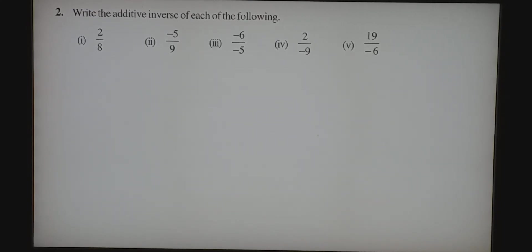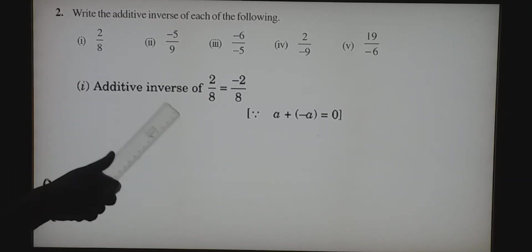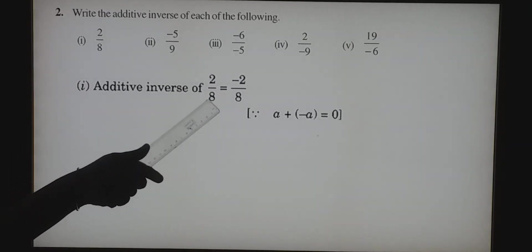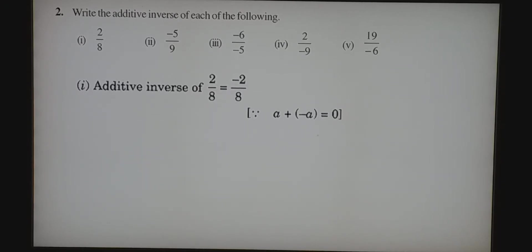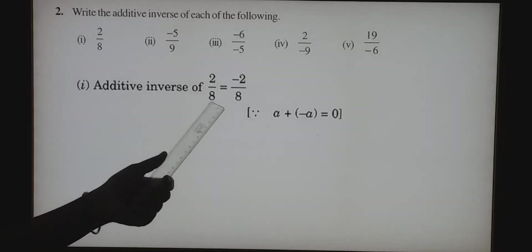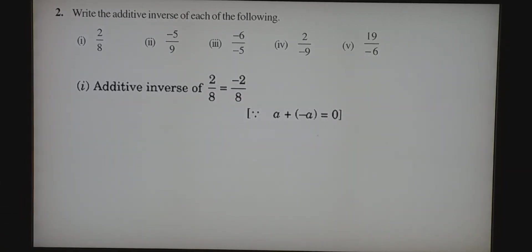Write the additive inverse of each of the following. There are 5 questions given. Additive inverse of 2 by 8: the given rational number is a positive rational number, so the answer becomes a negative rational number, because additive inverse means we have to change the sign alone. To confirm your answer, if you add both the question and answer, you will get the sum as 0.